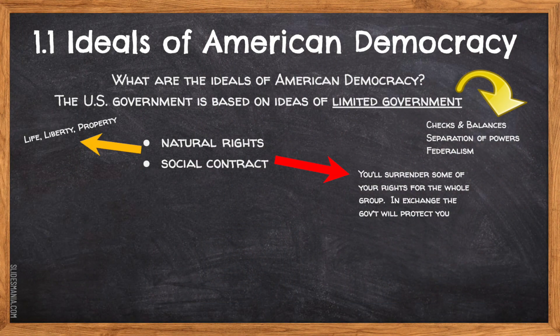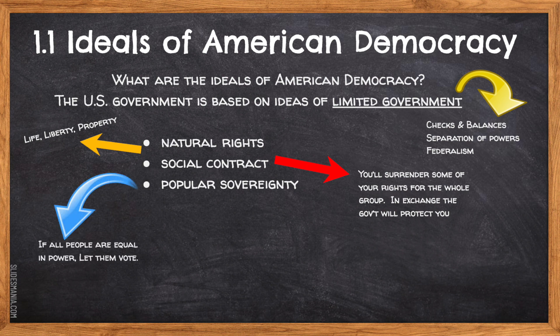The third ideal of American democracy is that of popular sovereignty. The idea behind popular sovereignty is that if all members of a country are equal with their natural rights, then they have the right to exercise power — that the government cannot do anything without the consent of the people, and that we, the people, give the government power.